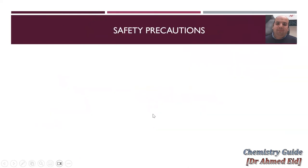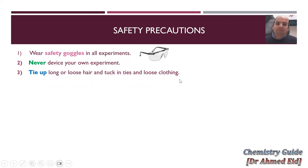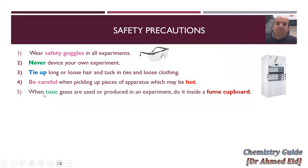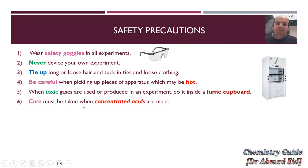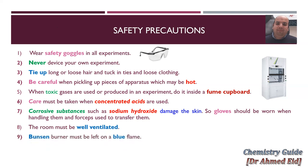When we talk about safety precautions — in IGCSE exams you may be asked about safety precautions for any experiment. At the beginning, you have to wear safety goggles in all experiments and never devise your own experiment. You must be under the supervision of your instructor. Tie up long or loose hair and tuck in ties and loose clothing. Be careful when picking up pieces of apparatus that may be hot. When toxic gases are used or produced, do it inside a fume cupboard. Care must be taken when dealing with concentrated acids. Caustic substances such as sodium hydroxide will damage the skin, so gloves should be worn and forceps used to transfer them. The laboratory room must be well ventilated, and the Bunsen burner must be lit on a blue flame.